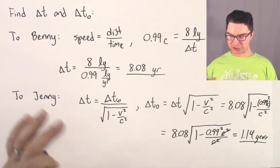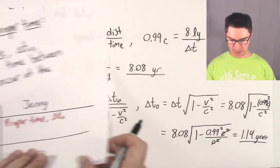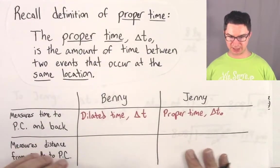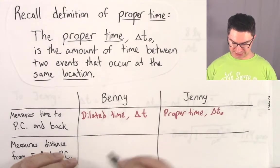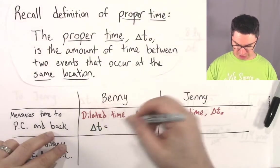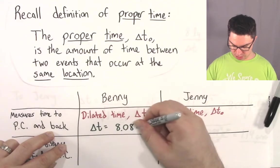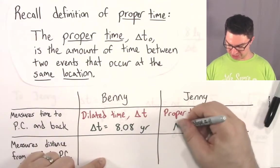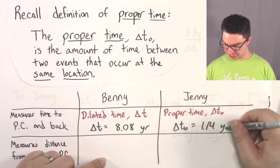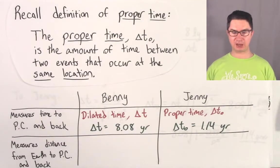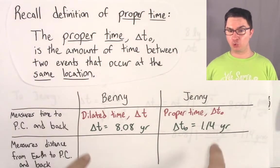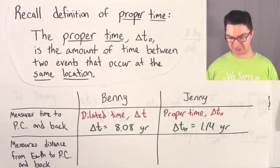Very interesting. Let's return to our all-important table and put in the times. Benny measured a dilated time delta T equal to 8.08 years, and Jenny measured a proper time delta T-naught of 1.14 years. Now we have the times measured by both. The question is: if they don't agree on times, will they agree on distances traveled?